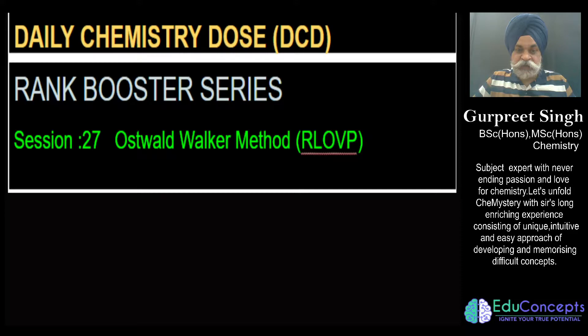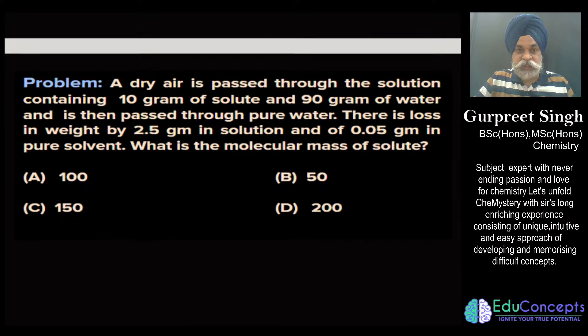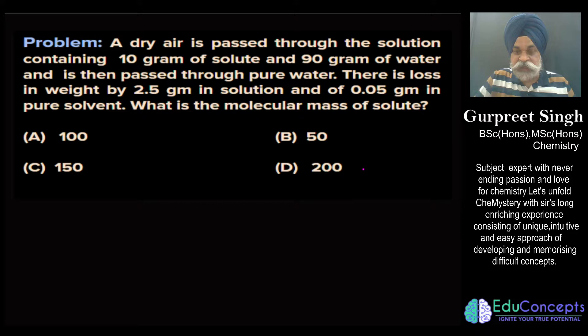Hello students, welcome to today's session of Daily Chemistry Dose. Today we shall be discussing one important topic: the Ostwald Walker method, which belongs to the chapter of Solutions regarding relative lowering of vapor pressure. This is the experimental way of identifying relative lowering of vapor pressure. Some students got confused on this particular question, so I suggest you first try it by pausing this video.